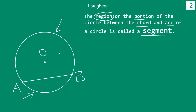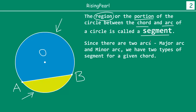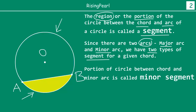So this is a segment, and this is a segment. Since there are two arcs — major arc and minor arc — for any one given chord AB, we have two segments. One is shown in bright yellow and the other in blue. The portion of the circle between the chord and the minor arc is called the minor segment.